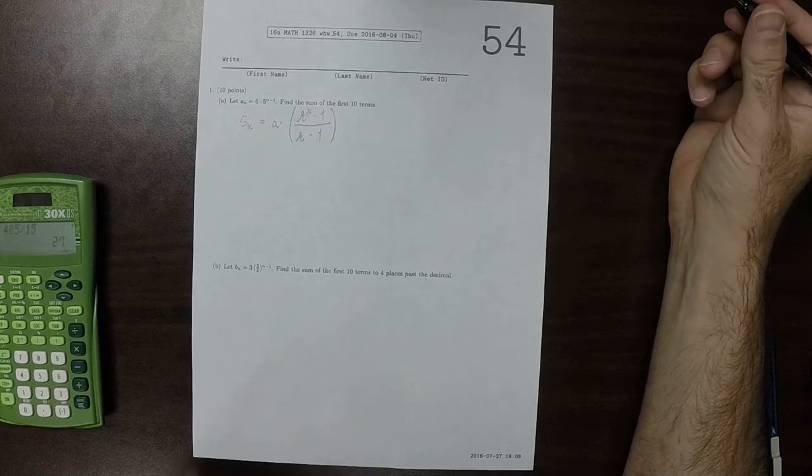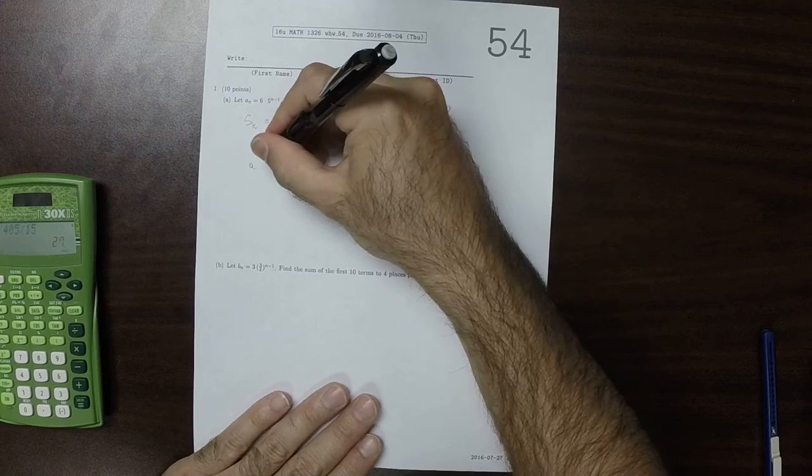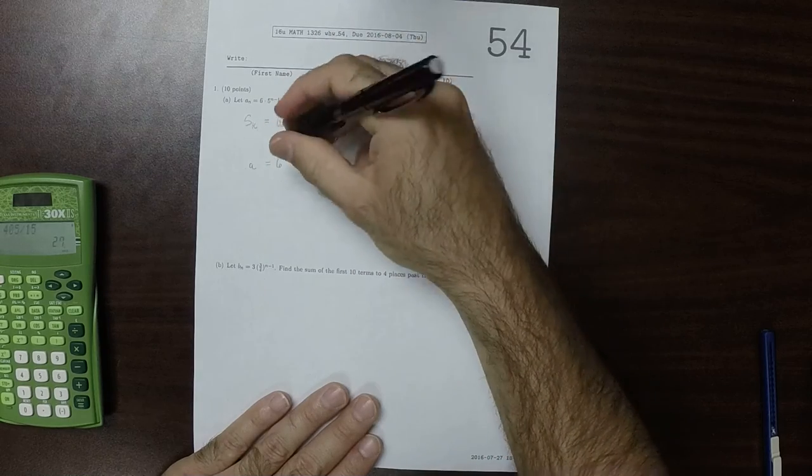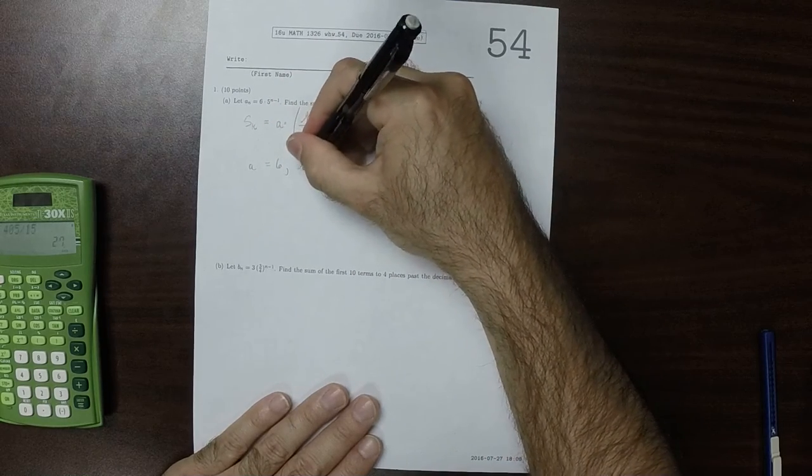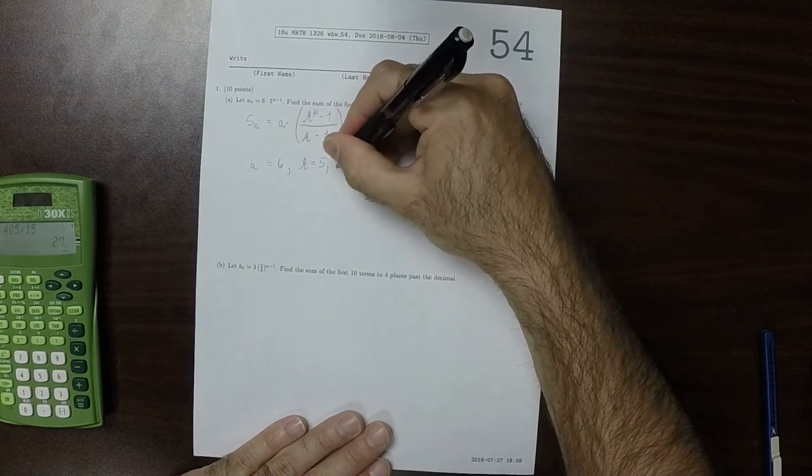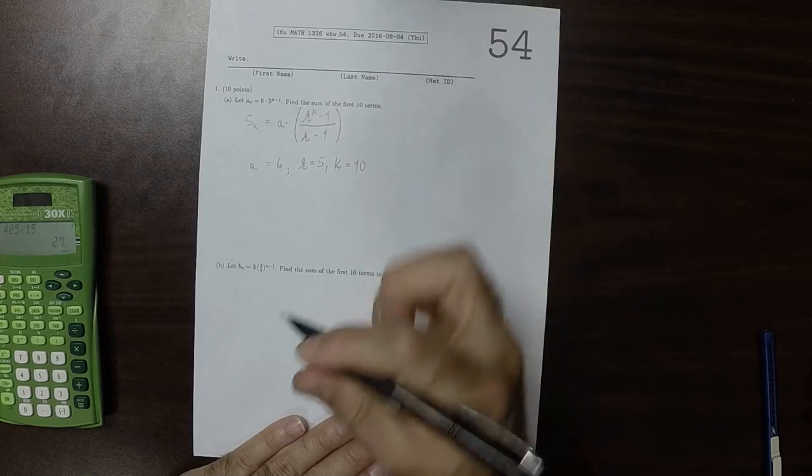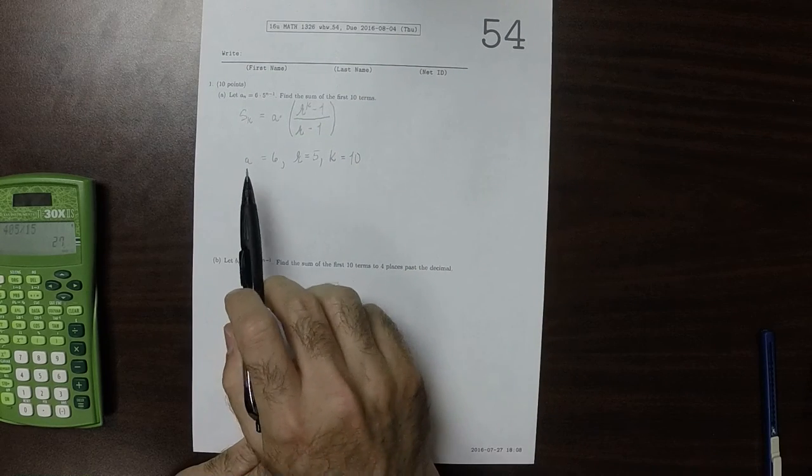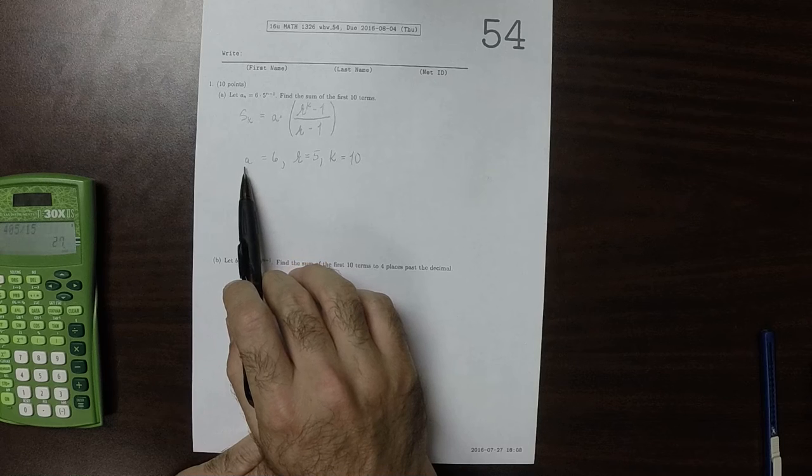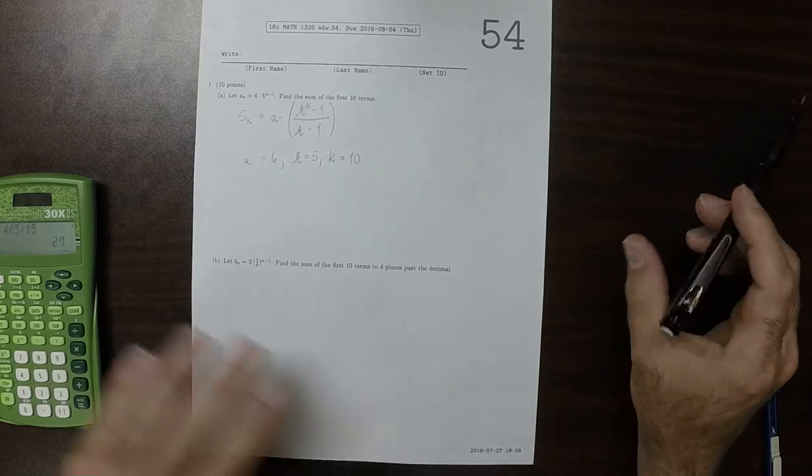We're going to do this formula with A is 6, R is 5, and K is 10. So that's a geometric sequence with A is 6, R is 5, and we want the first ten terms.